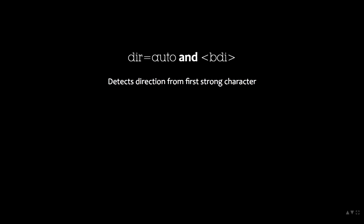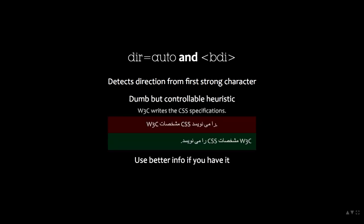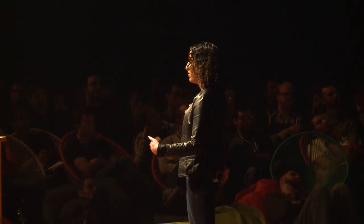Sometimes you don't know the directionality of your content — this is very frequently the case with user input or data from a database. To help with that, there is an auto value for dir, and there's a BDI element, which stands for bi-directional isolation. The BDI element is just like a span, except it automatically has dir equals auto. What it does is derive the direction of the paragraph from the first strong character, skipping all the neutrals. This is a really dumb heuristic and doesn't always work, but it is very controllable and easy to manipulate. If you have better info than the first strong character, we strongly encourage you to use that rather than relying on this heuristic in the browser.